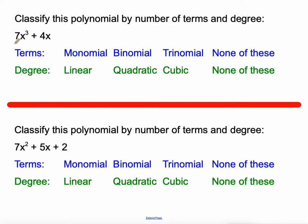Number of terms: 7x³ and 4x. That's two terms. We call that a binomial, just like a bicycle has two wheels, a binomial has two terms. And then it is to the third degree. So we call that cubic. This is a cubic binomial.